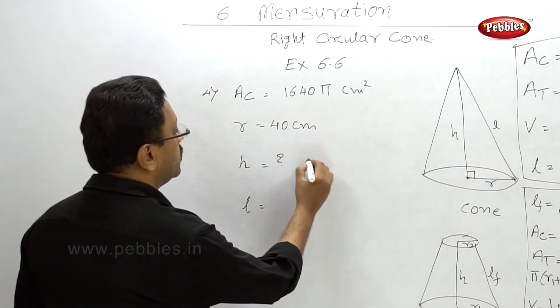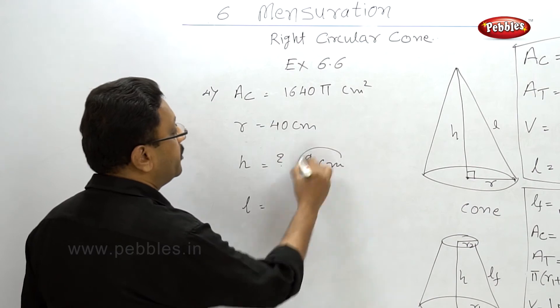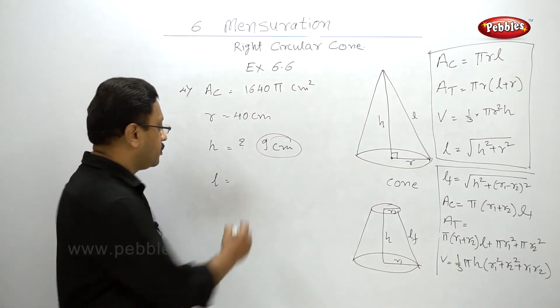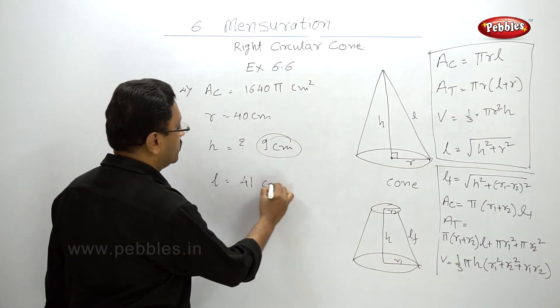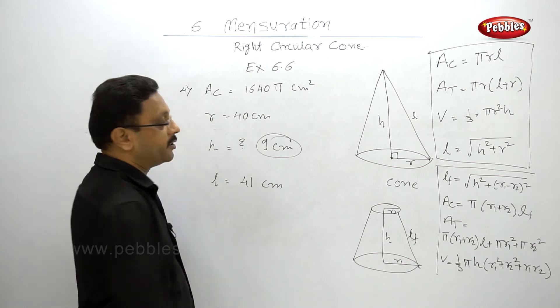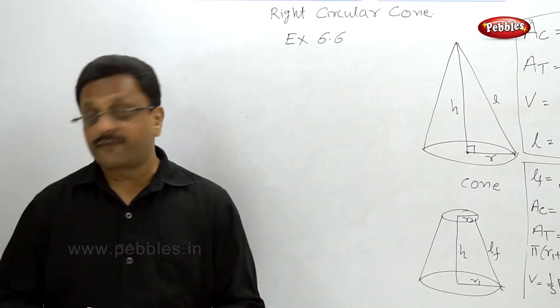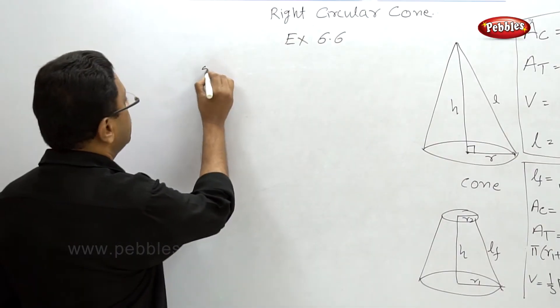The height of the cone is 9 centimeters and the slant height is 41 centimeters. Let's go to the fifth and last example of exercise 6.6.